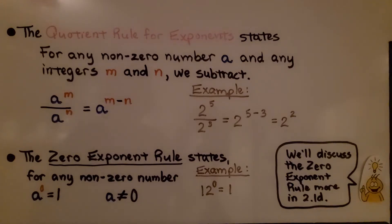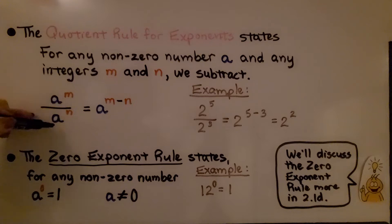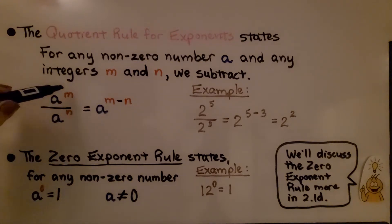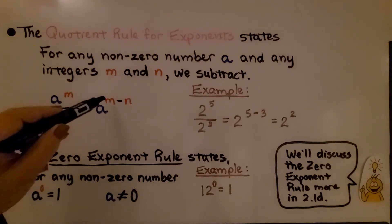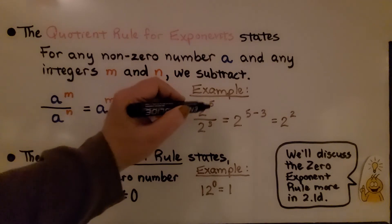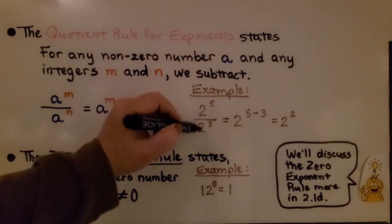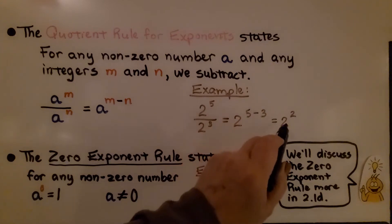That brings us to the quotient rule for exponents. It states for any non-zero number a and any integers m and n — those would be the exponents — we subtract. With like bases in a fraction, which is a division problem, we have a to the m over a to the n, equal to a to the m minus n. An example would be the quotient of 2 to the fifth and 2 to the third powers — since both bases are 2, we do 5 minus 3 to get 2 to the second power.